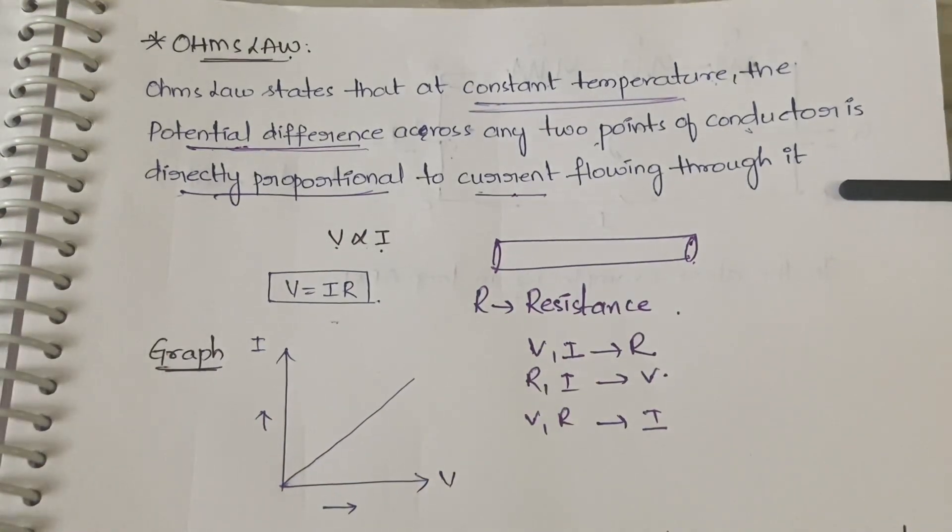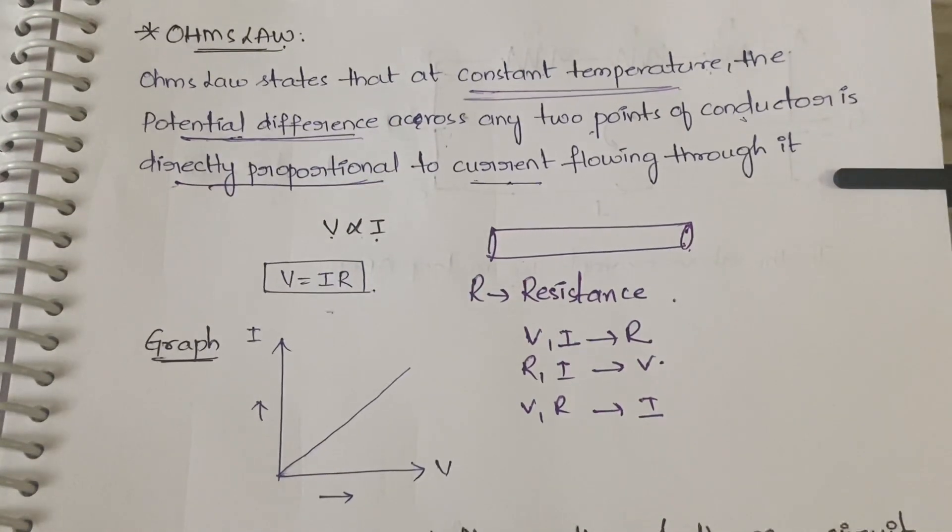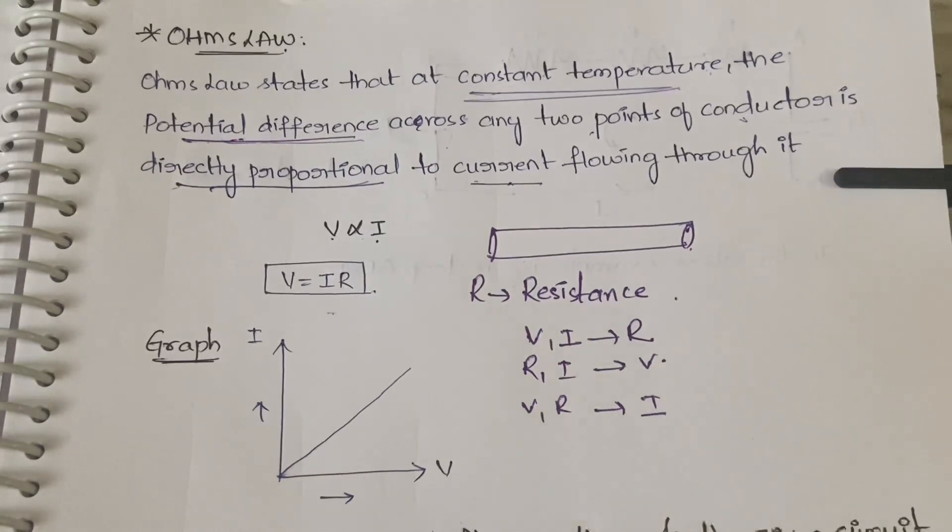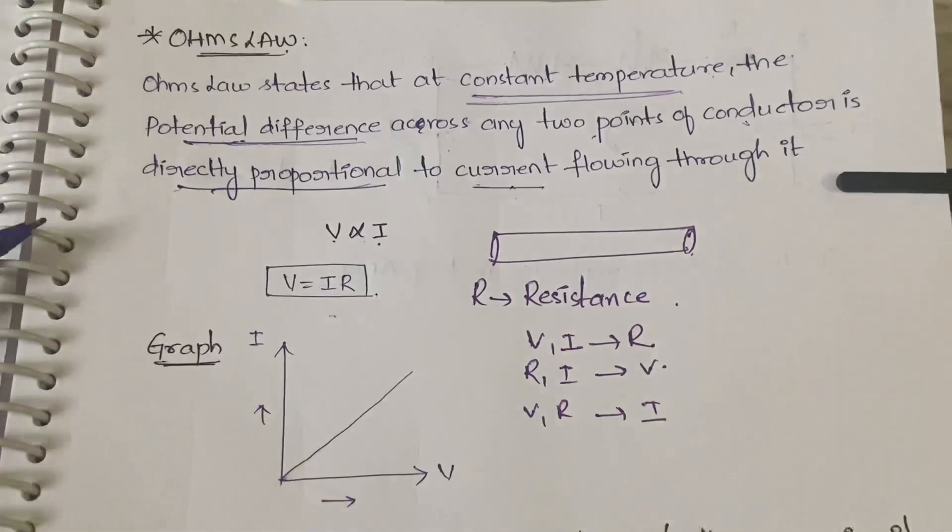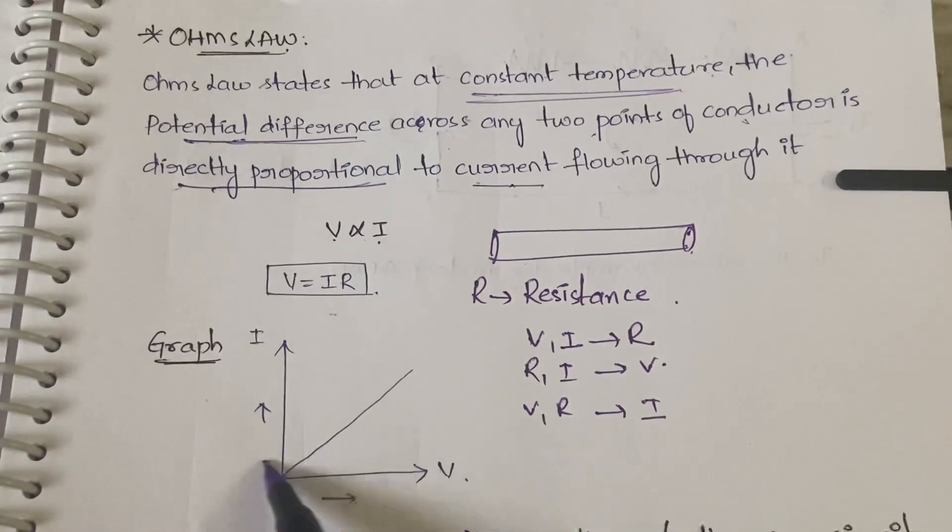Next comes the graph of Ohm's Law. Since I said both are directly proportional to each other, what do you mean by direct proportionality? If one is increasing, the other also will increase. If one is decreasing, the other also will decrease.